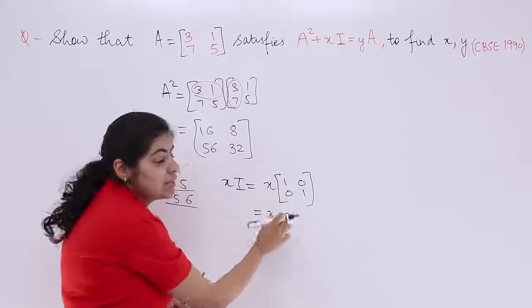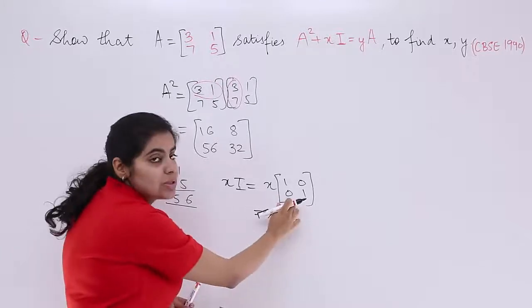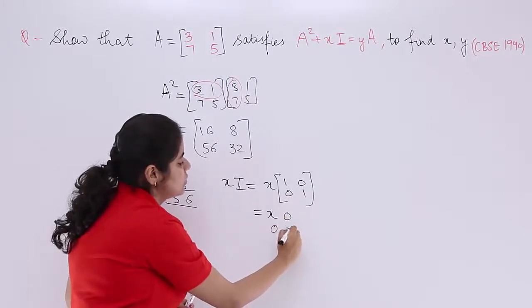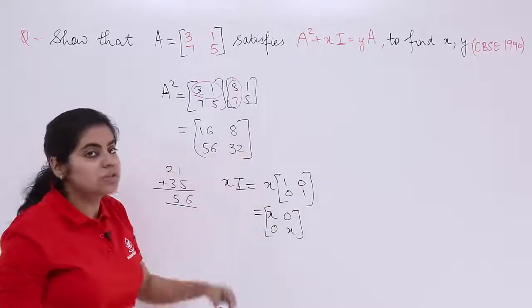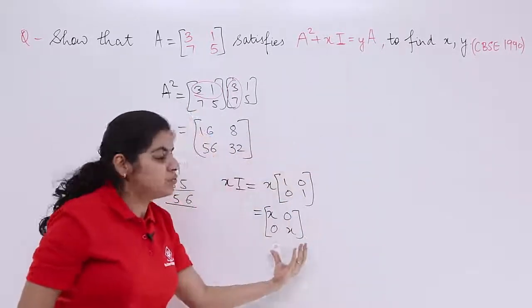So that means X has to be inserted inside. So it becomes X times 1 is X, X times 0 is 0, X times 0 is 0, X times 1 is X. So it is something like this. Now when you have been doing A square, you found out. When you have XI, you found out.